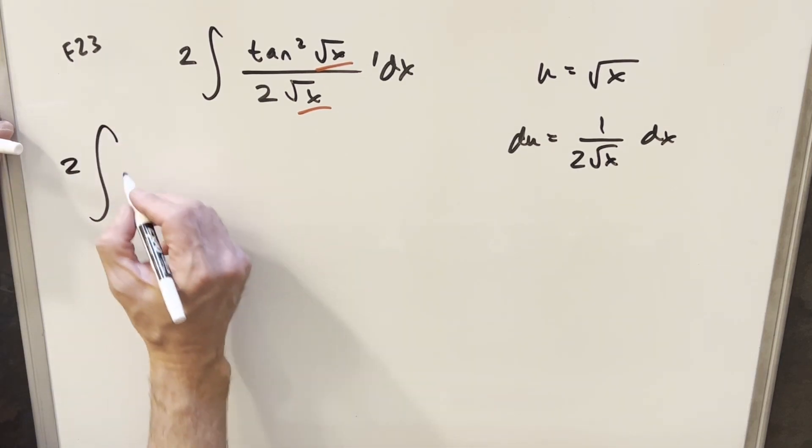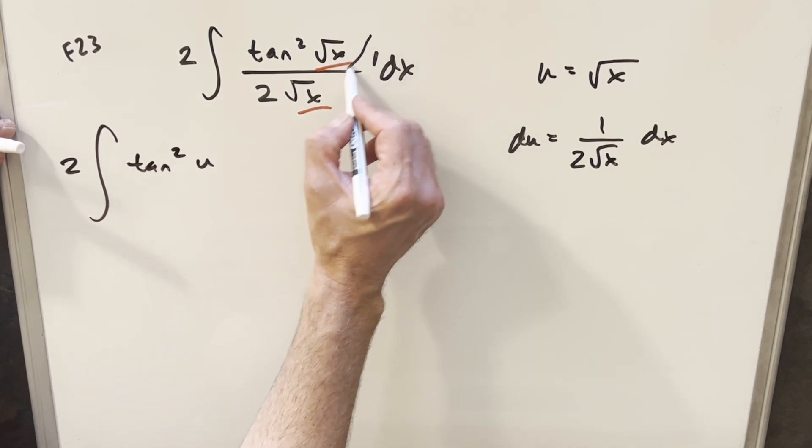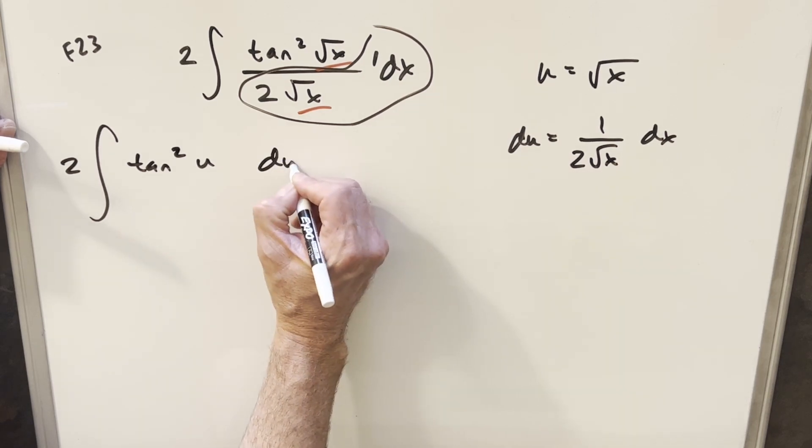And then we can just make this substitution. So we're going to have our 2 out front. We'll have tan squared. This is just going to be a u here. And then again, all this business is going to be exactly our du. So we're just going to have du.